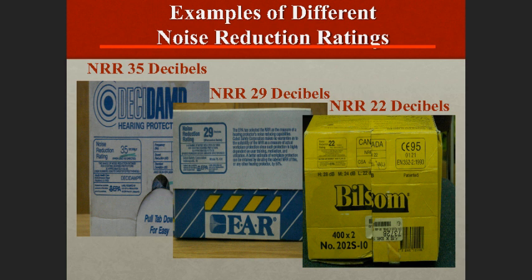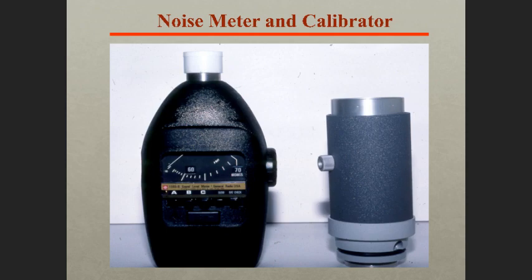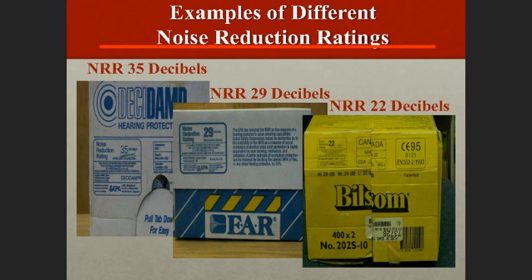Now let's talk about the NRR, or noise reduction rating. Once we figure out the sound level in a particular environment using our noise dosimeter, we get a baseline for what the ambient sound pressure is. For example, if we have a noisy machine shop with caterpillar electrical generators and a lot of other equipment going — very loud — and we have 122 decibels in that area, a Bilsom hearing protection earplug has an NRR rating of 22 decibels.